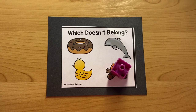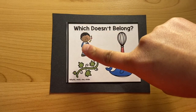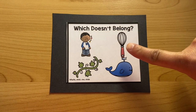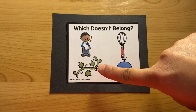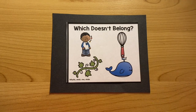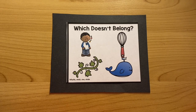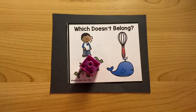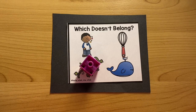Next one. Whistle. Whisk. Vine. Whale. Which word doesn't belong? Vine. That's right. Vine doesn't belong because vine begins with the sound V. And the rest of the words begin with the sound W. Good job.